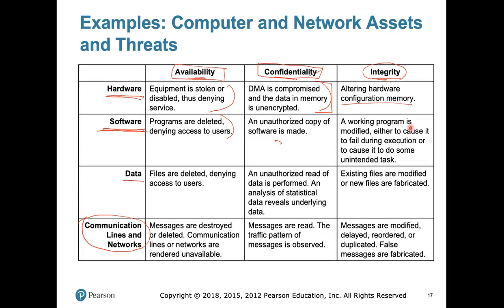For data assets, examples are more tangible. For availability, files or information in memory are deleted or access to them is blocked. For confidentiality, it refers to any case where someone is able to read data they are not allowed to read — an unauthorized read of data is a violation of the confidentiality of a data asset.